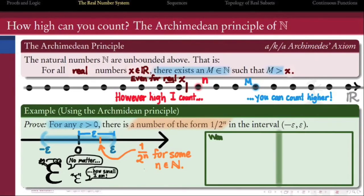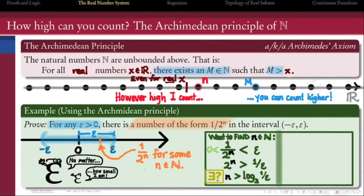Now, if I rearrange the inequality that we're trying to prove here, we're trying to find an n such that 1 over 2 to the n is less than epsilon. If I rearrange that inequality to solve it for n, I find that I need to find an n which is greater than the base 2 log of 1 over epsilon.